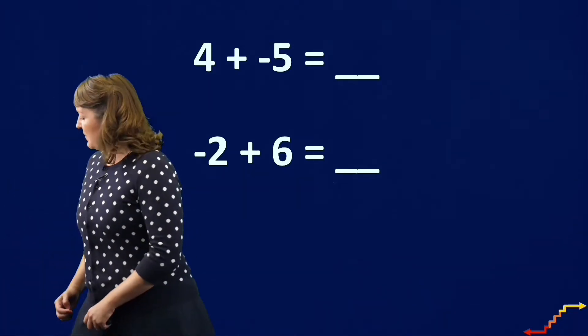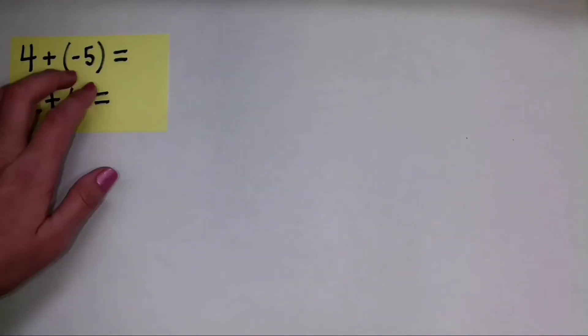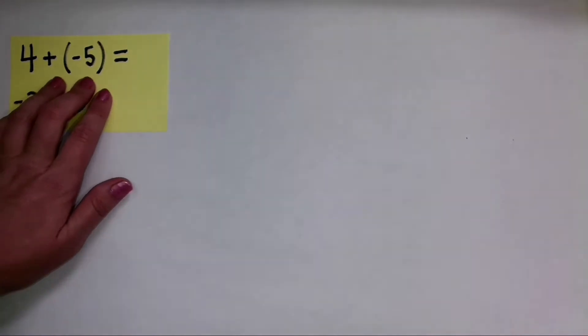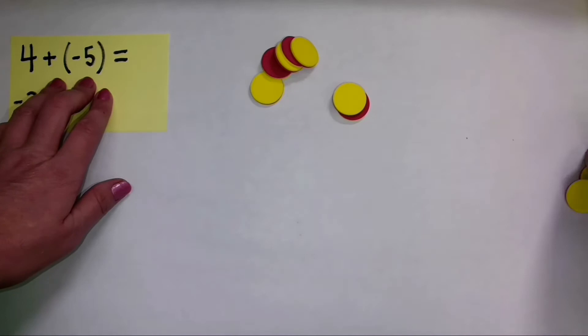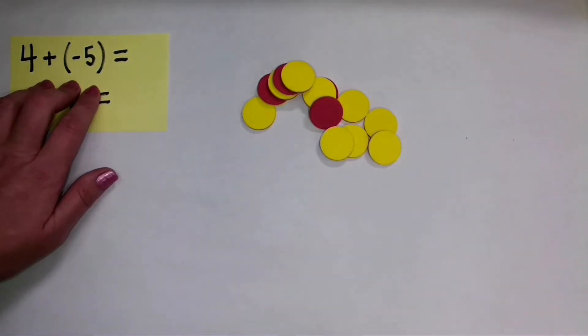So here are the two problems that we are doing today. 4 plus negative 5 is the first problem, so let's focus right now on this problem. Now I'm going to use two color counters to show the addition of this problem.